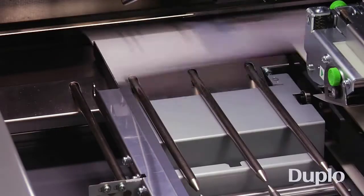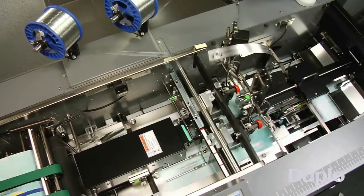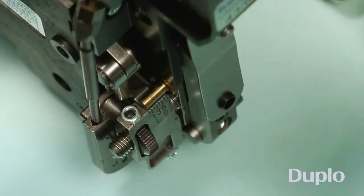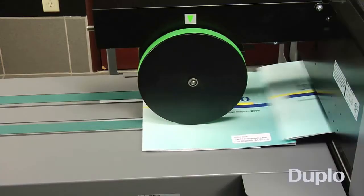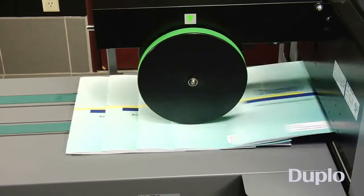As the sheets leave the buffer area, they are merged with the cover and fed into the booklet maker for stitching, folding, and trimming. Within seconds, complete booklets are delivered on the stacker.